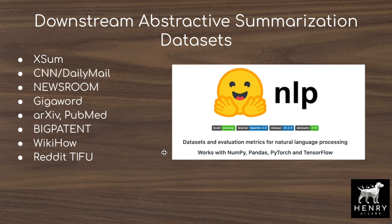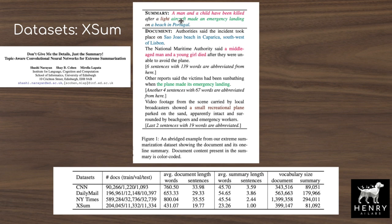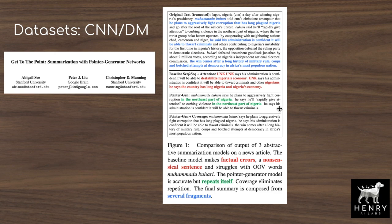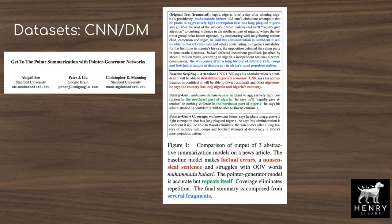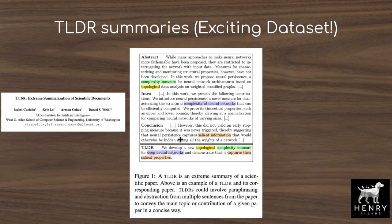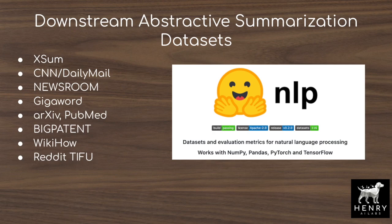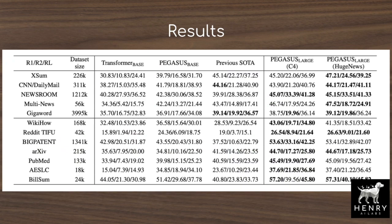Looking at the data sets, XSum is an example of extreme summarization with a short one-sentence summary, while CNN/Daily Mail produces longer generations of about 50 words. TLDR is also a case of extreme summarization, with a highly compressed summary from a lot of text. The datasets vary enormously in number of samples and compression ratio, from an entire PubMed or arXiv paper down to a short target sequence.